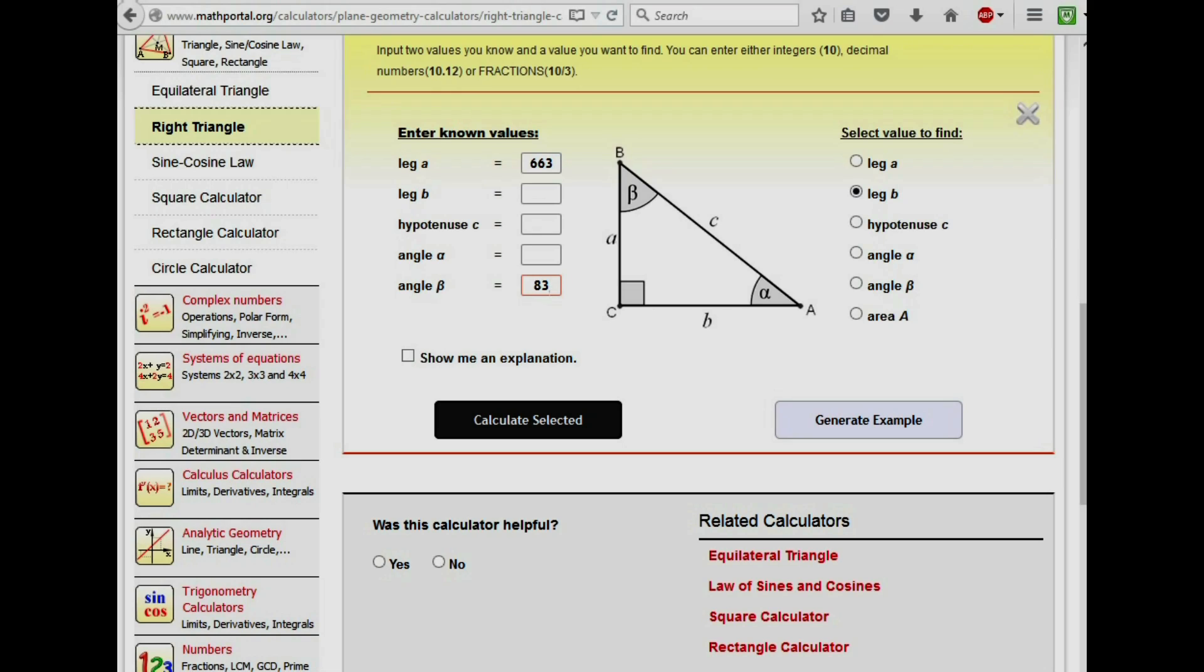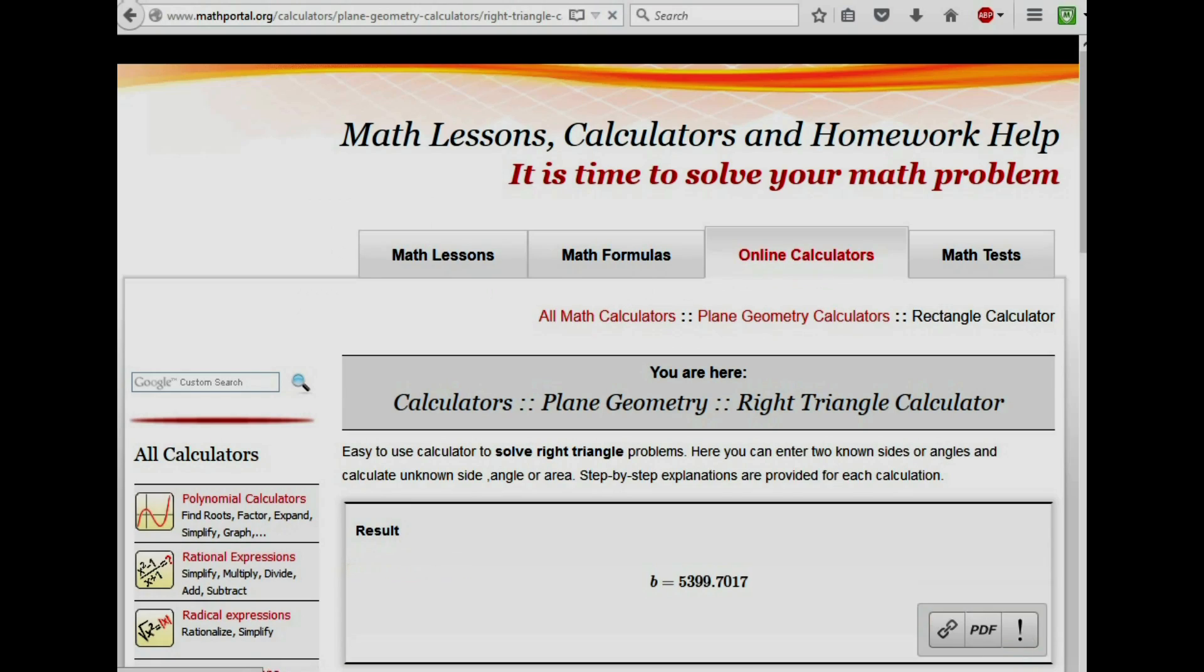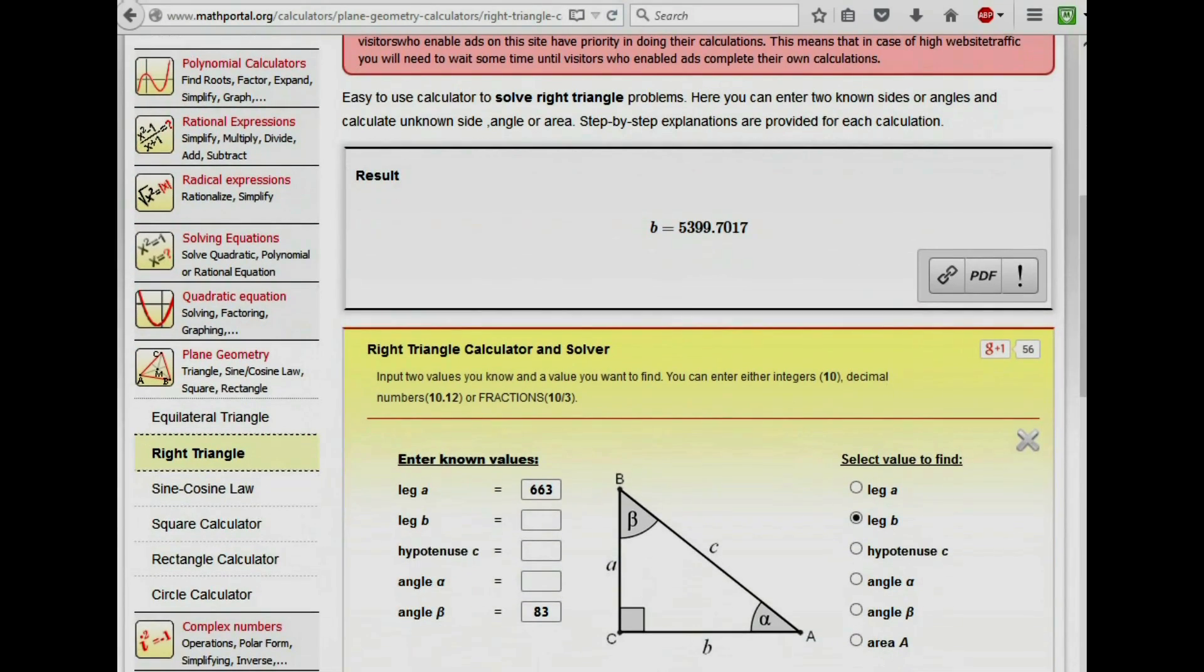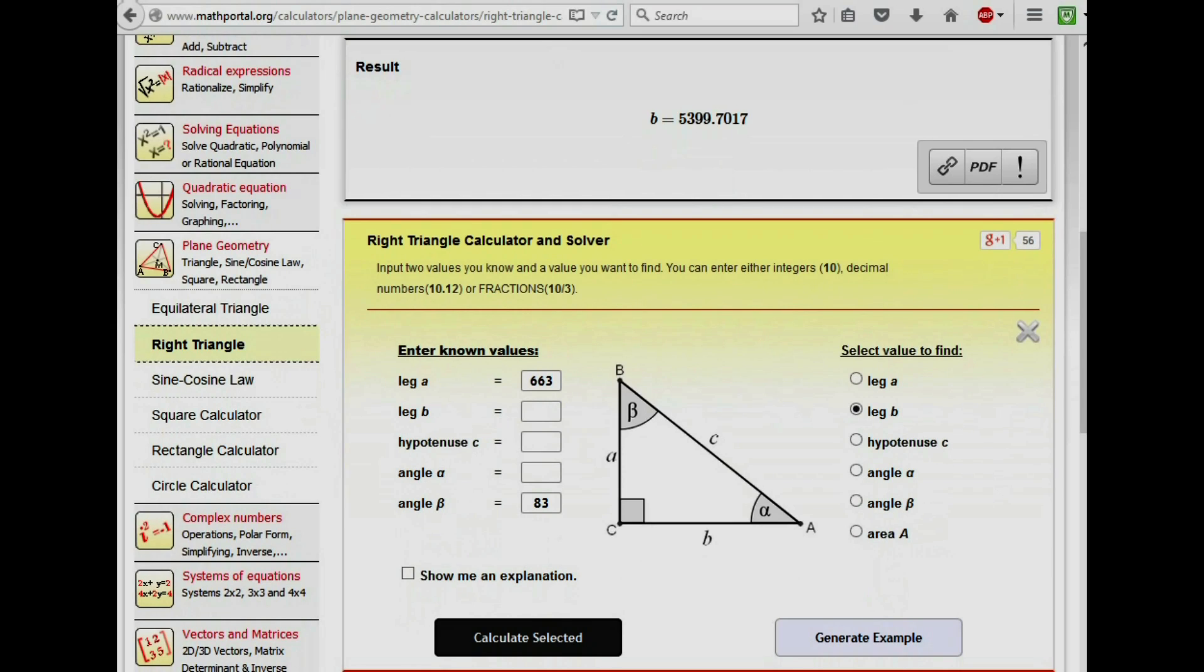So let's input that bit of data. Now we want to find the side of the triangle B. So I'll check the leg B there. So if we calculate that, there we go, we calculate that. Oh look, there we go, we have a figure. We have, based on Eratosthenes' data and his experiment and the more accurate measurement of the distance between Syene and Alexandria, we get a figure of 5,399.7017. So the distance between Syene and the sun is 5,399 miles.